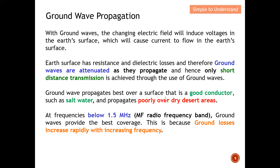Ground wave propagates best over a surface that is highly conductive, such as salt water, but propagates poorly over dry desert areas. Because of this, ground wave is suitable for ship-to-ship or ship-to-shore communication. At frequencies below 1.5 MHz, ground wave provides the best coverage.